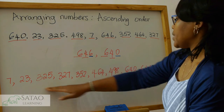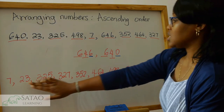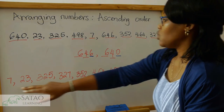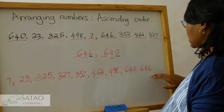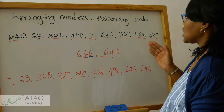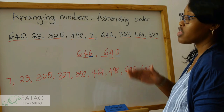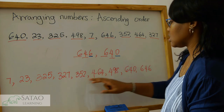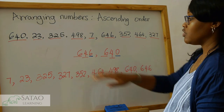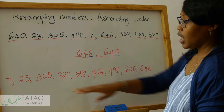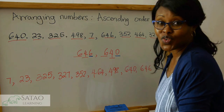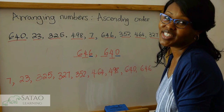So when we look at these numbers, we can see that we started with the smallest, which was a one-digit number, and we ended up with the biggest number, which was a three-digit number. When you're arranging numbers in ascending order, you can be given either a different number of digits or the same number of digits, but if you use that method you'll be able to arrange your numbers in ascending order. Thank you very much for watching and have a wonderful day.